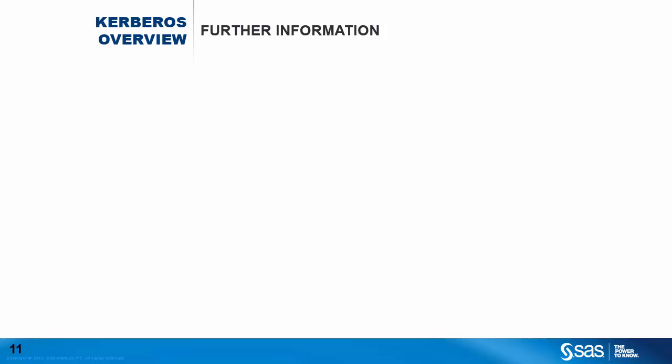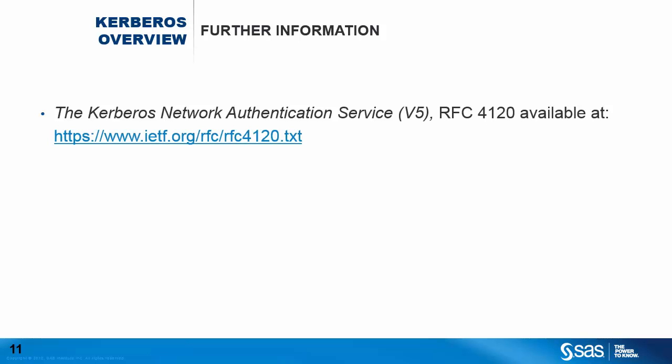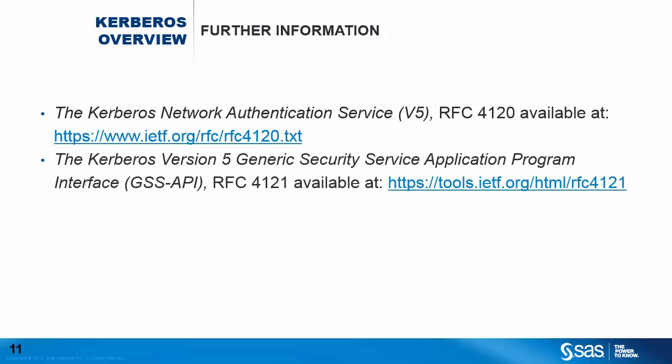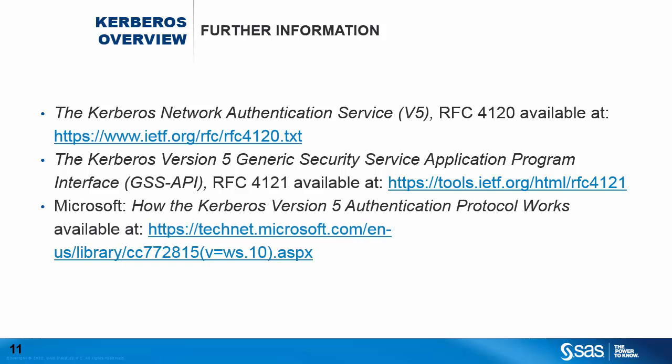This completes our overview of Kerberos authentication. In our next session, we will look at different process flows showing how these message exchanges used in the Kerberos protocol are put into action. For further information, the Kerberos protocol version 5 is defined in RFC 4120, the GSS-API protocol is defined in RFC 4121, and Microsoft have a great guide explaining how Windows implements Kerberos.